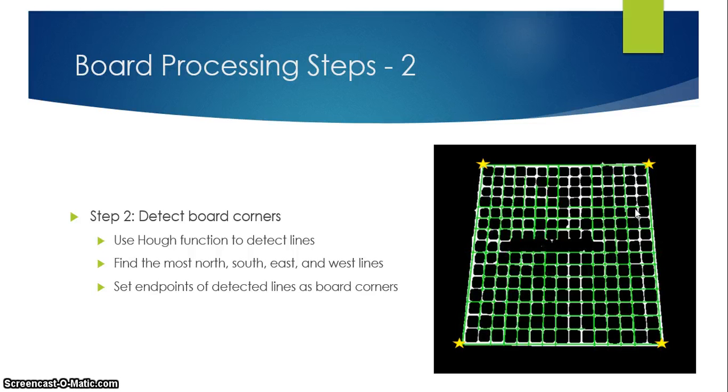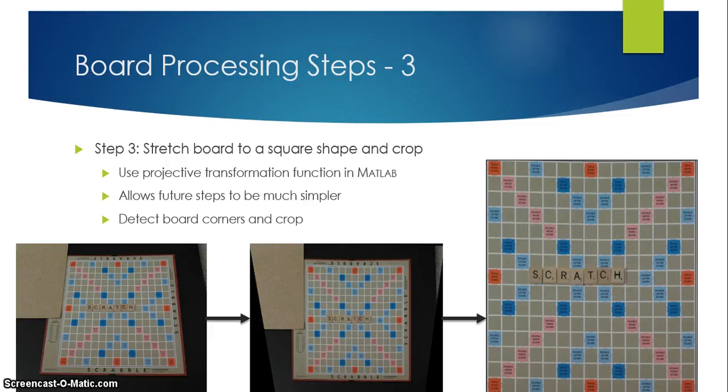So this board corner information is fed into the next part of the program which is the transformation part. It's the most interesting part. What this does is it maps those four corners you see here into a rectangular or almost square rectangle. In this middle picture this is a transformation that's already been applied and you can see the board looks as if you're looking straight down on it. This is done using a projective transformation function in MATLAB. So what you do is you input a set of four points and you input another set of four points that you want the first four points to be stretched onto.